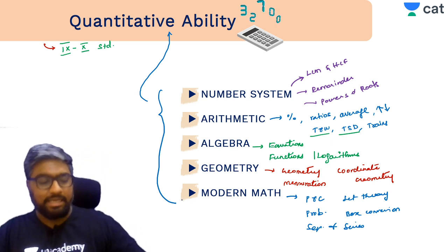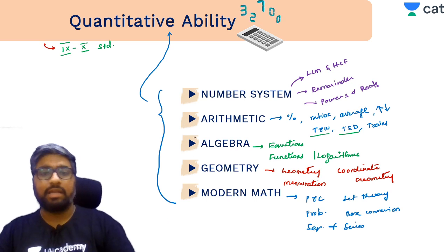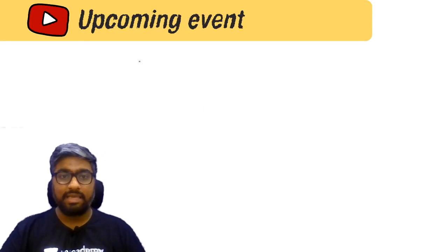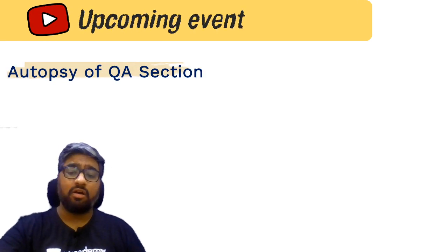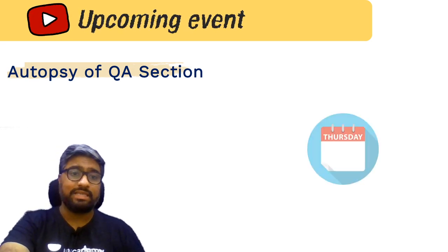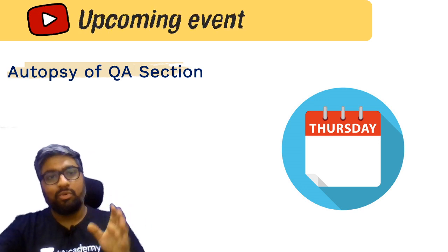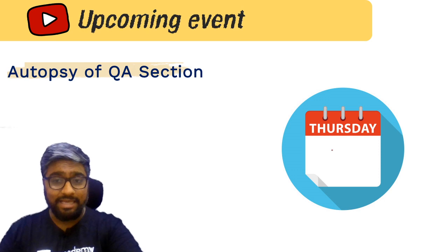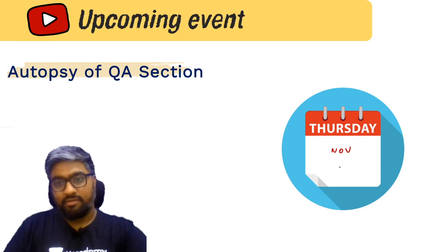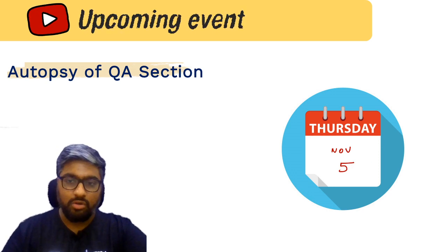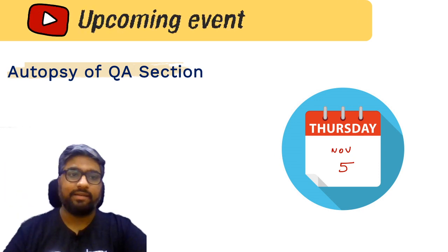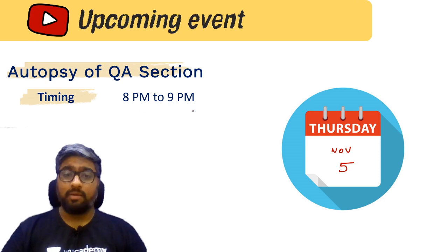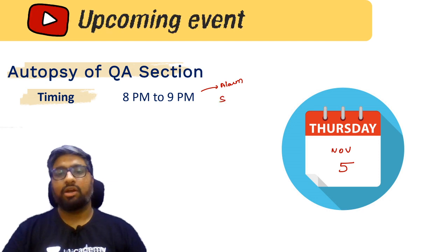We will talk about these in detail in the upcoming session. The next event is tomorrow — an autopsy of the Quantitative Ability section: a full deep-dive understanding of the entire quant section. It's happening on November 5th, tomorrow, here on this Unacademy CAT channel, at 8 PM to 9 PM.